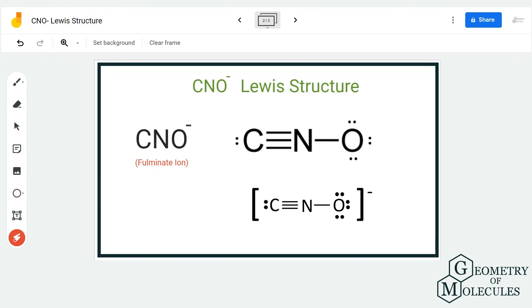As we are writing this Lewis structure for an ion, we have to place brackets and we'll have to mention a charge on it. So once you have done that, this is the way you can represent your Lewis structure for CNO minus ion, which is fulminate ion.